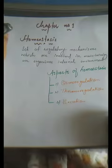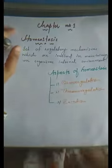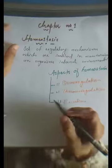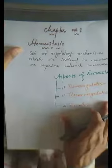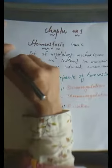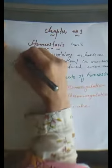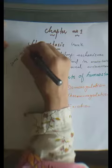There are a set of regulatory mechanisms which are involved in maintaining an organism's internal environment — that is called homeostasis. There are so many changes in our environment, and these changes can affect our internal environment, so we have to maintain our internal environment. The word homeostasis is made up of the Greek words: 'homeo' means same, and 'stasis' means to stay — meaning we have to keep our conditions the same.